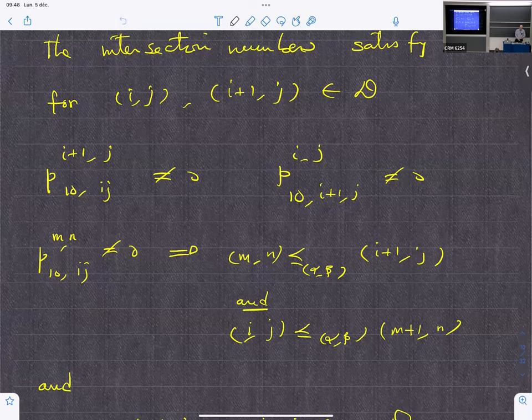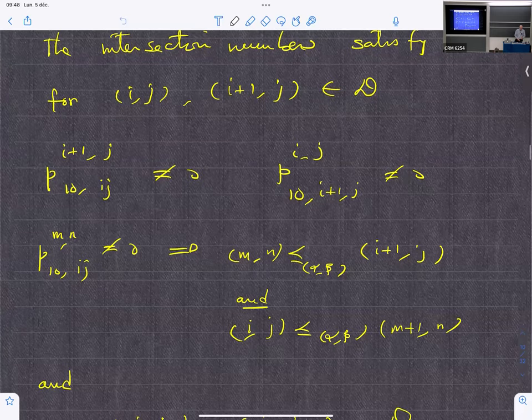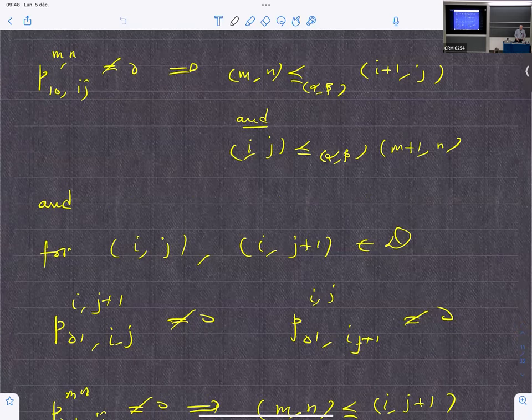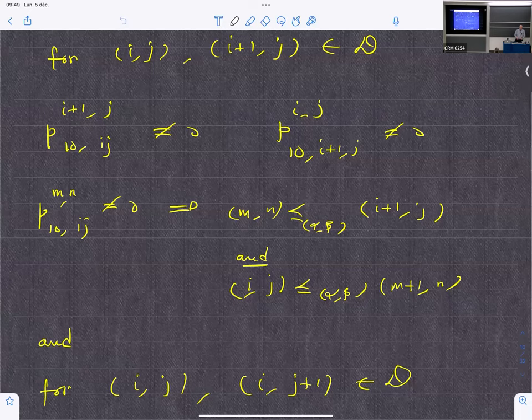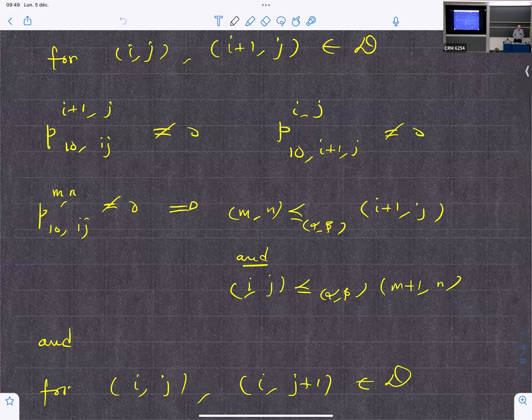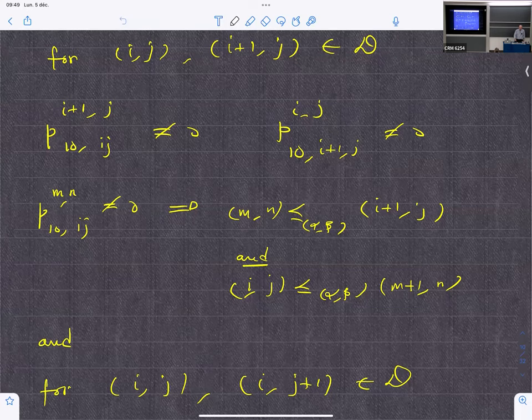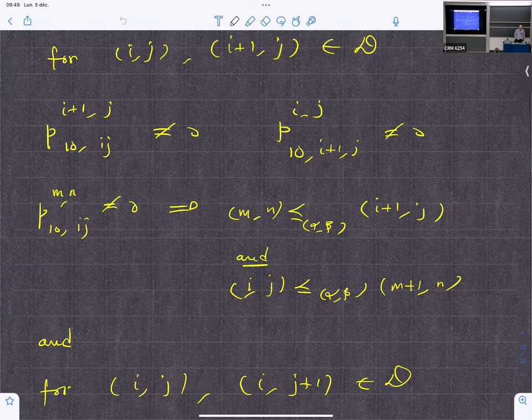Namely, you have the obvious one, but these intersection numbers will be non-zero if K here is between |i-j| and i+j. This is what makes the equivalence between P-polynomial schemes and distance-regular graphs.